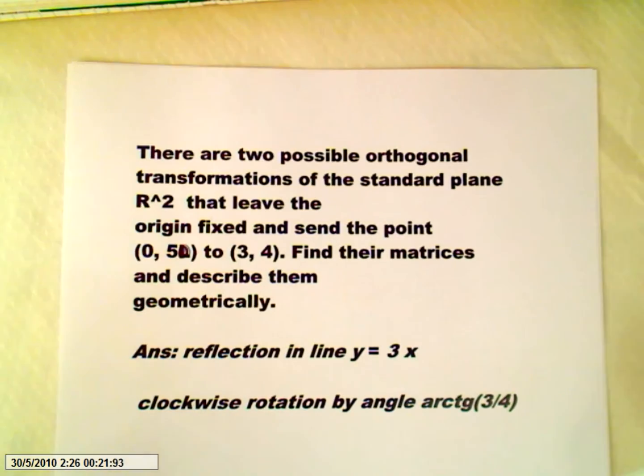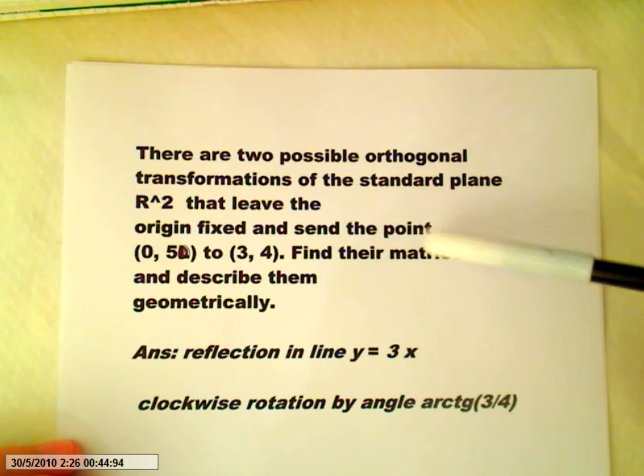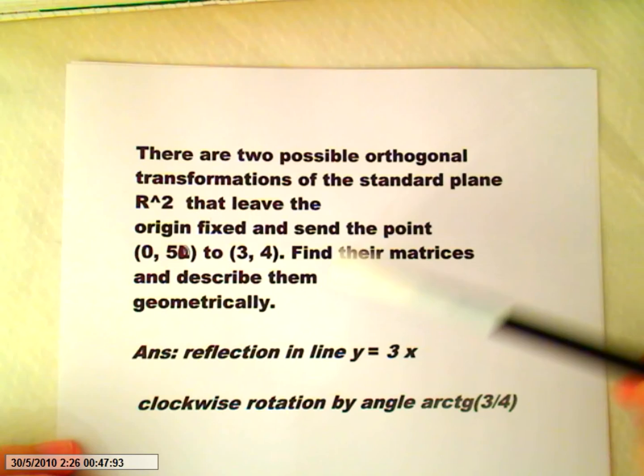So the point (0,0). Usually you can solve all these problems looking at the origin as any other point. The origin is a point with coordinates (0,0). That leaves the origin fixed and sends the point (0,5) to (3,4). Find their matrices and describe them geometrically.